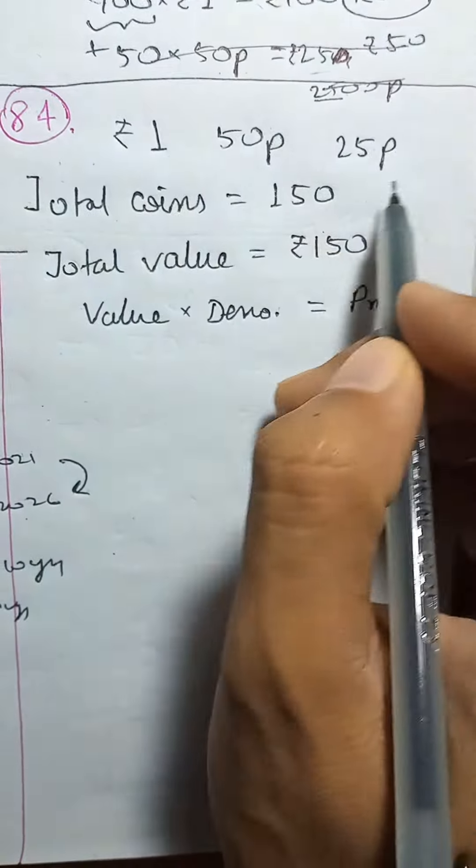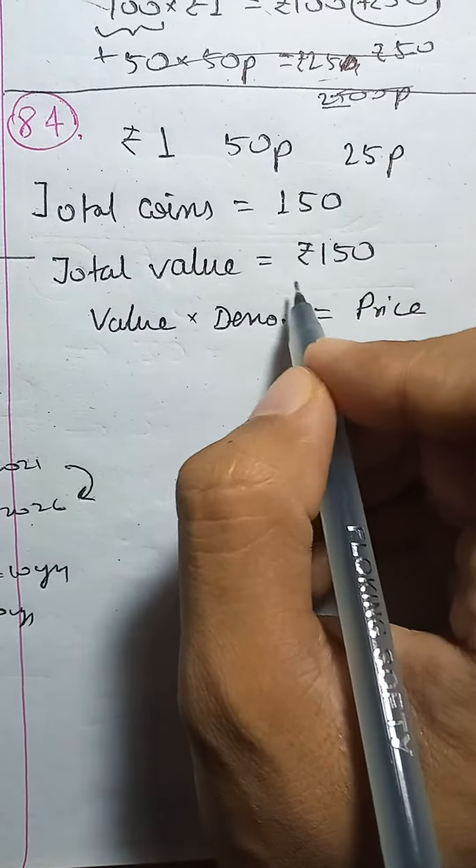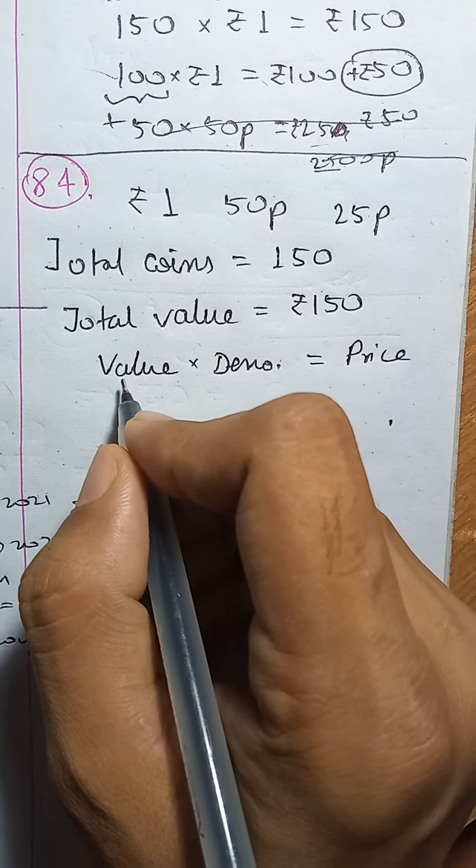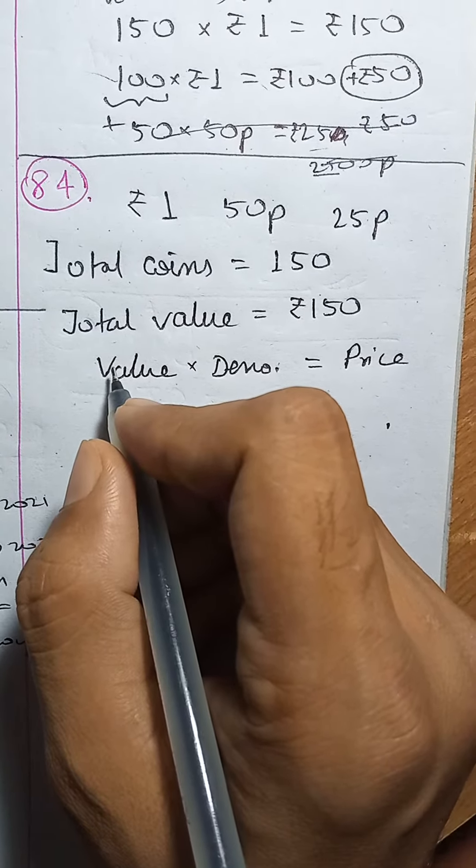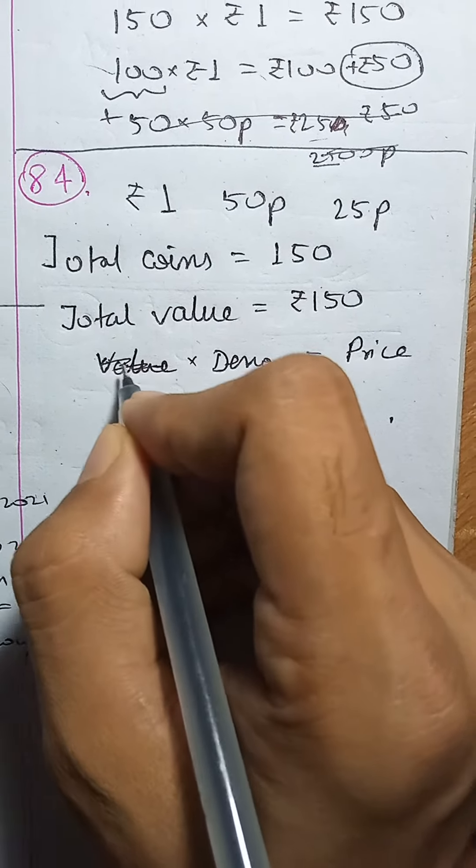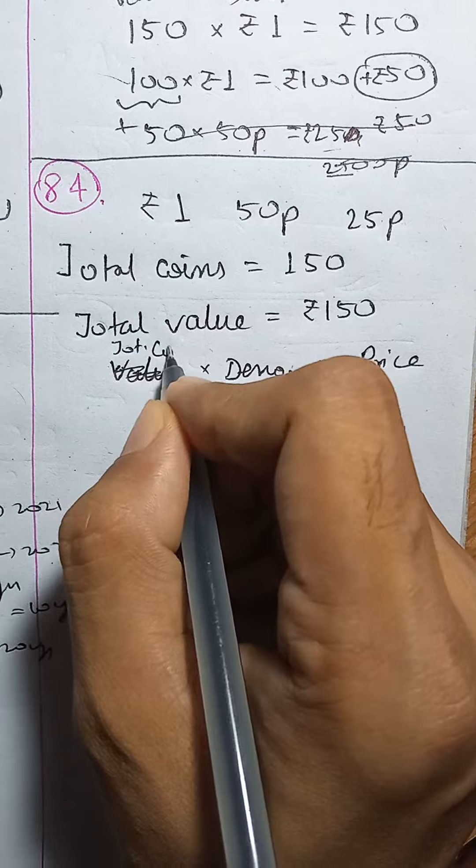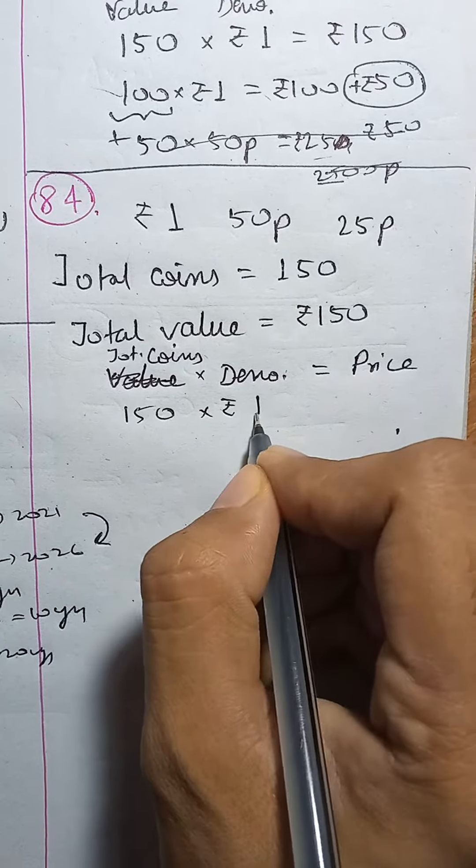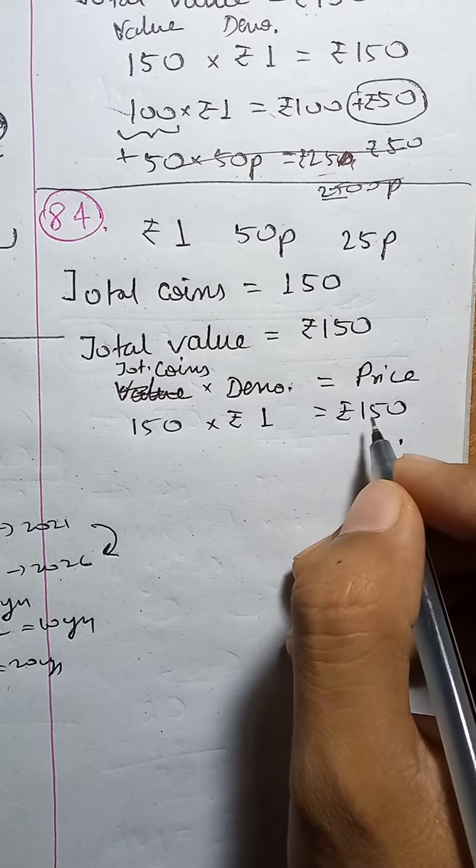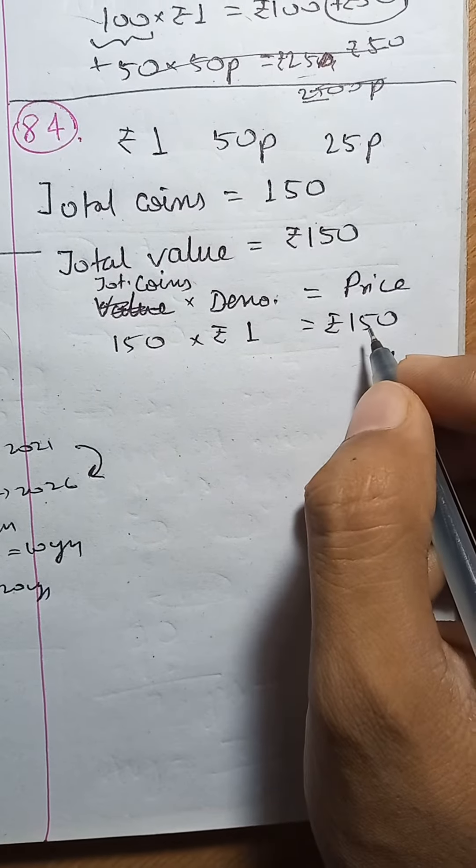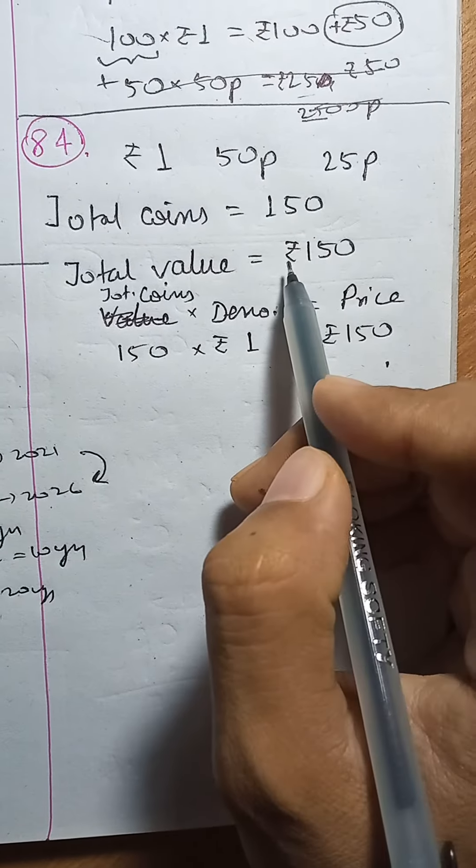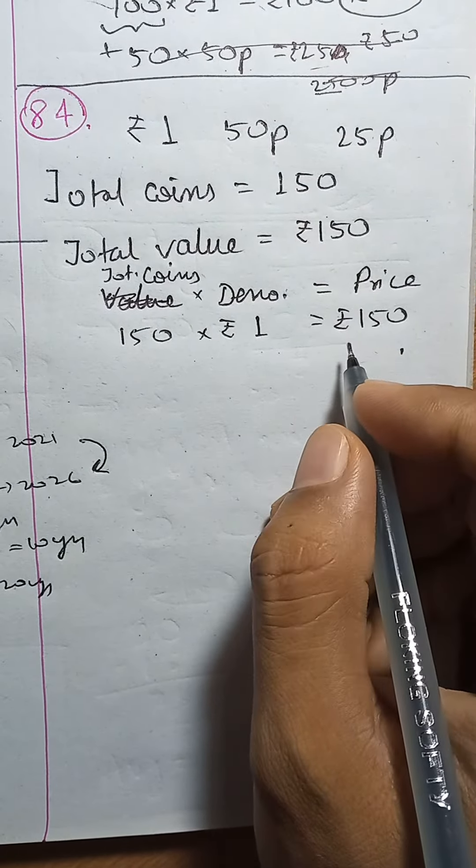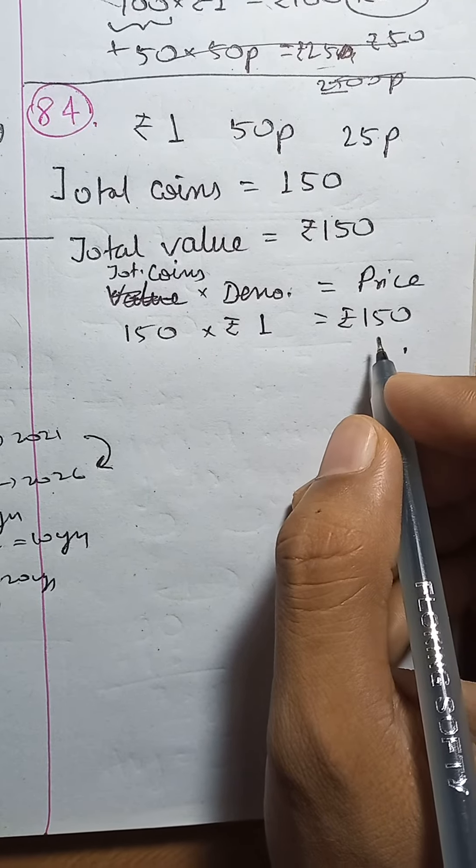So, if you take 50 paise coins and value, only one possibility. Total coins, total coins and denomination rupees 1. 50 is included, 25 paise. 150 is less or more. Answer.